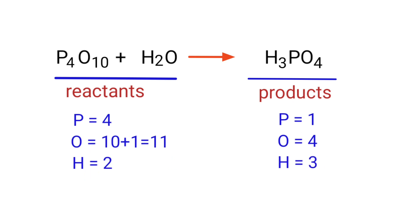In the reactants side, there are 4 phosphorous atoms, 11 oxygen atoms, and 2 hydrogen atoms present. On the products side, there are 1 phosphorous atom, 4 oxygen atoms, and 3 hydrogen atoms present.